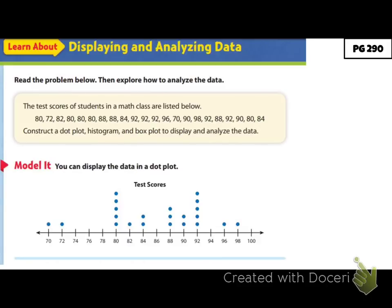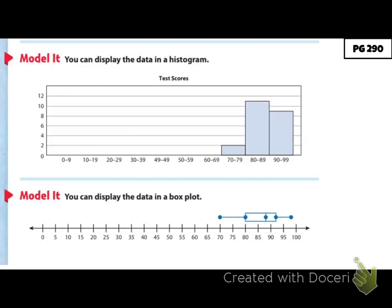Now we're displaying and analyzing data together. The test scores of students in a math class are listed below — construct a dot plot, histogram, and a box plot to display and analyze the data. In the model: we have our dot plot with dots for each data point on a number line. For our histogram, we created equal ranges or intervals and filled in the numbers for each score. For the box plot, we found our median, lower quartile, upper quartile, minimum, and maximum, and plotted them.